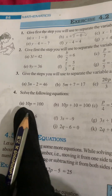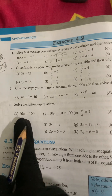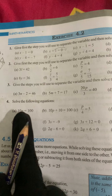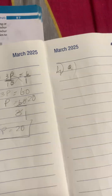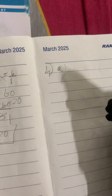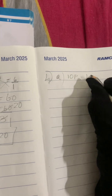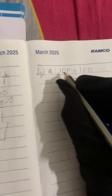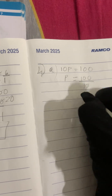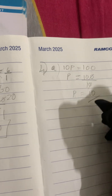Now let's quickly move to the fourth main: solve the following equations. A: 10p equals 100. Take the variable p to the left-hand side: p equals 100, shift 10 to the denominator — cancel 10 and 10 — therefore p equals 10 is our final answer.